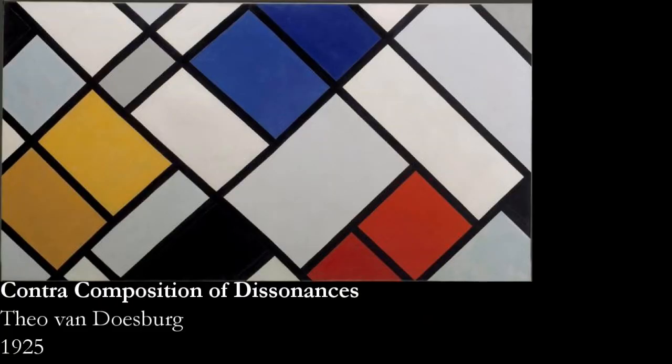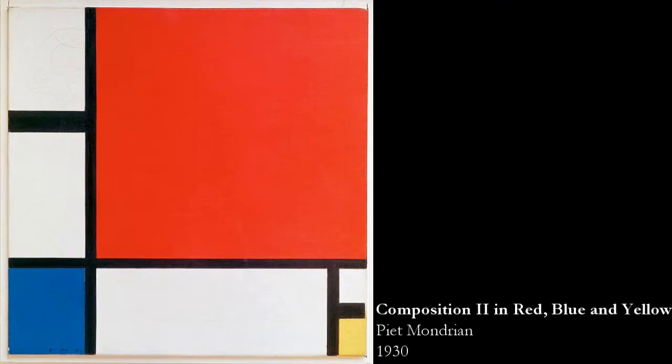It lasts until about 1923 when Mondrian left because De Stijl starts including controversial diagonal lines. But it was all about balancing colour and space, but not actually representing life — simply form, abstraction.